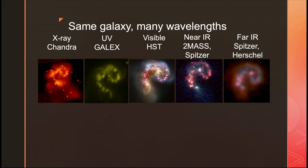This is the same little galaxy seen at many different wavelengths. On the far left is an X-ray image from Chandra. Next is an ultraviolet image from GALEX. The middle image is optical from the Hubble Space Telescope. Next is a near-infrared image from Spitzer. And the last one is a far-infrared image using Herschel data.